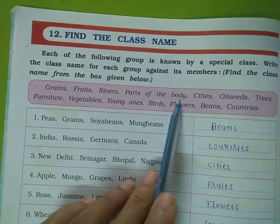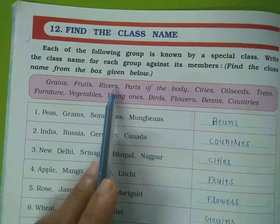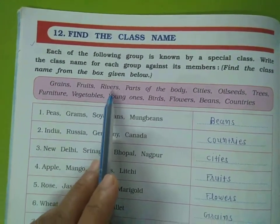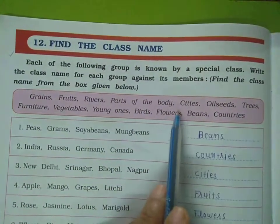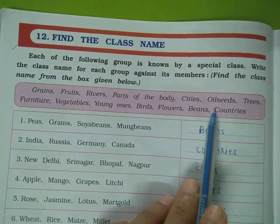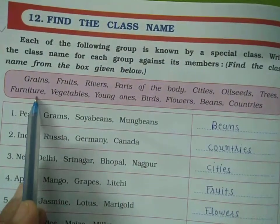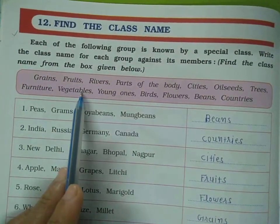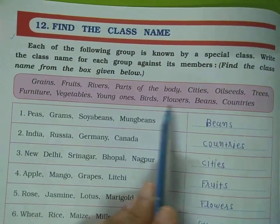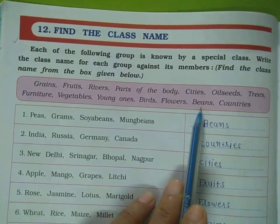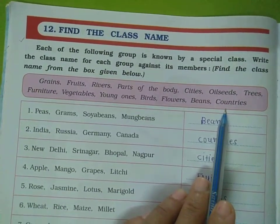The class names in the box are: grains, fruits, rivers, parts of the body, cities, oil seeds, trees, furniture, vegetables, young ones, birds, flowers, beans, and countries.